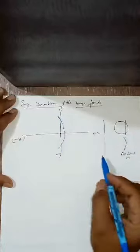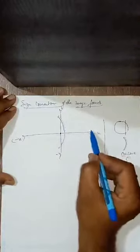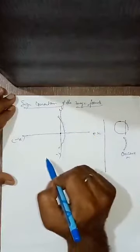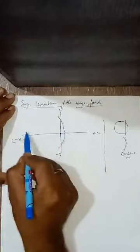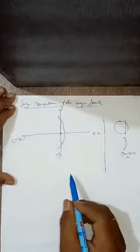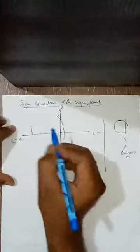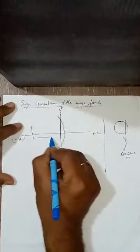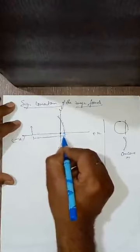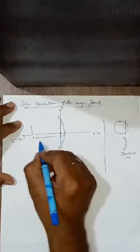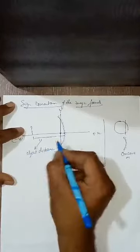Concave mirror has been kept here at the center. You know that whenever you put any object behind the mirror, nothing will be obtained — no image will be found. When the object is kept in front of it, then only an image will be found. So the object will always be kept in front of the mirror, whatever mirror it may be — concave, convex, plane, any kind of mirror. Consider an object here. This distance from the pole, the center of the mirror, is called U — the object distance. And it is always negative.